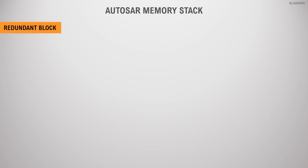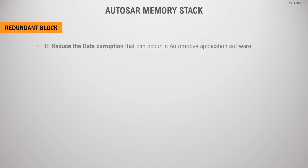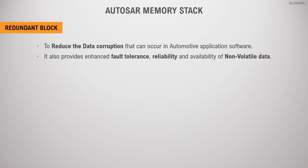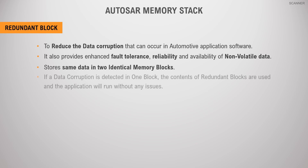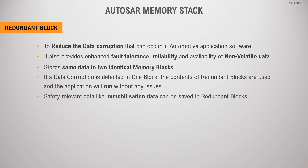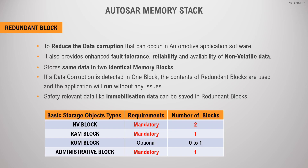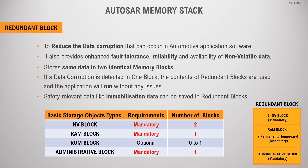The second block management type is the redundant block type. It is used to reduce data corruption. It also provides enhanced fault tolerance, reliability, and availability of non-volatile data. This is achieved by storing data in two identical memory blocks. If a data corruption is detected in one block, the contents of the redundant block are used and the application will run without any issues. Safety-relevant data like immobilization data can be saved in redundant blocks.